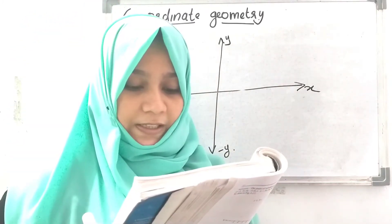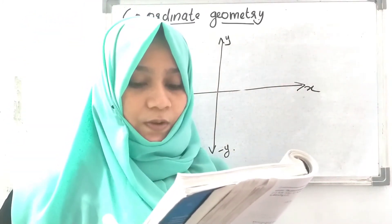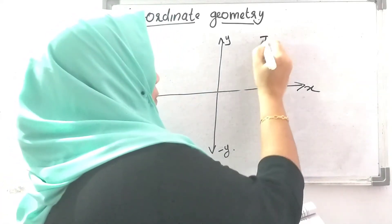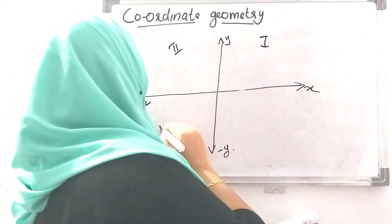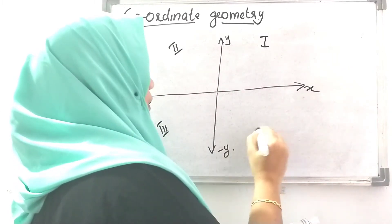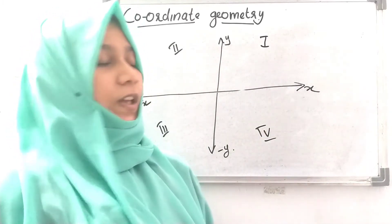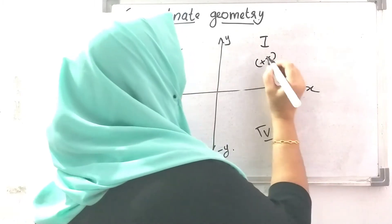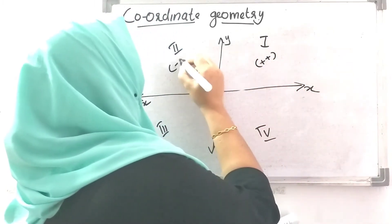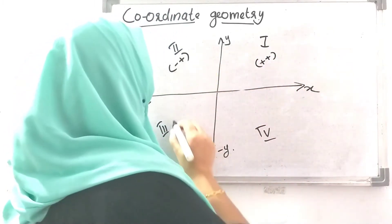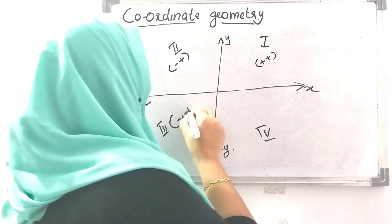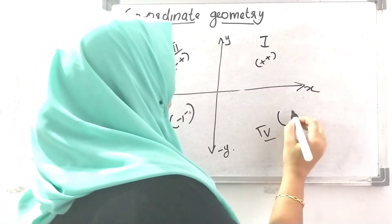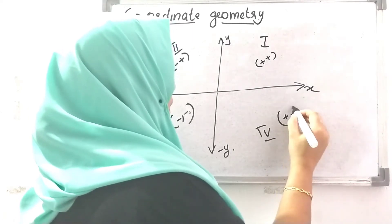The coordinate axes divide the plane into four parts called quadrants. This is part 1, part 2, part 3, and part 4. In the first quadrant, x is positive and y is positive. In the second quadrant, x is negative and y is positive. In the third quadrant, x is negative and y is negative.